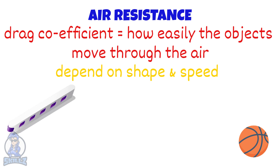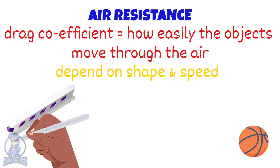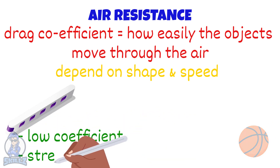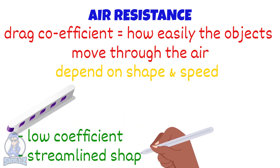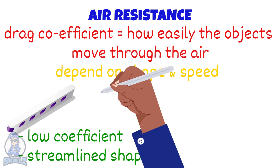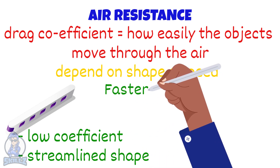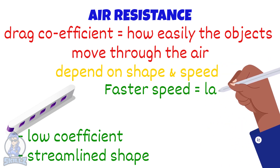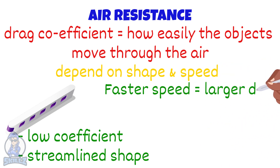High-speed trains are designed to have a low drag coefficient by having streamlined shapes to allow air to flow more smoothly around them. More fast-moving objects have streamlined shapes since the drag force increases with increasing speed.